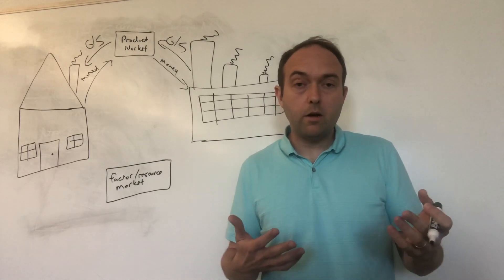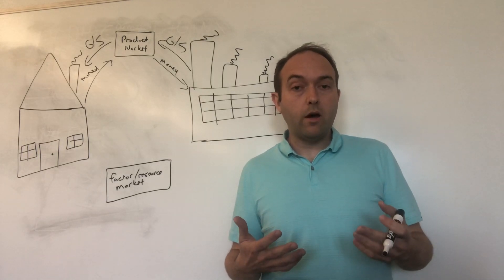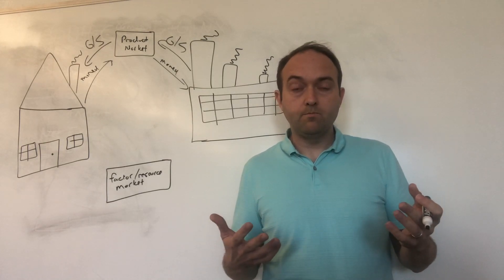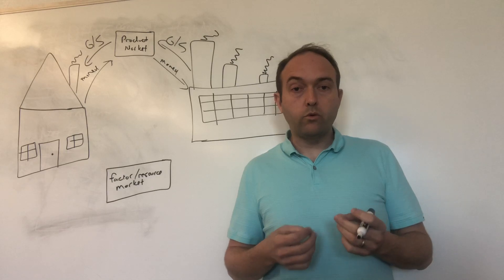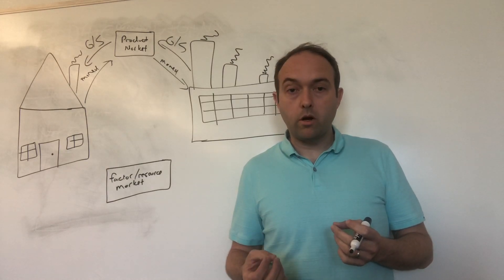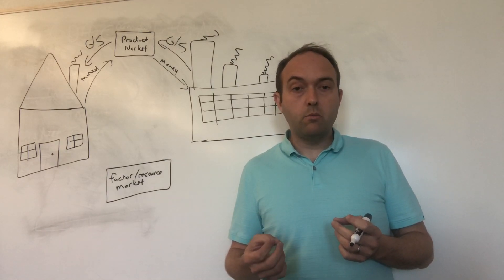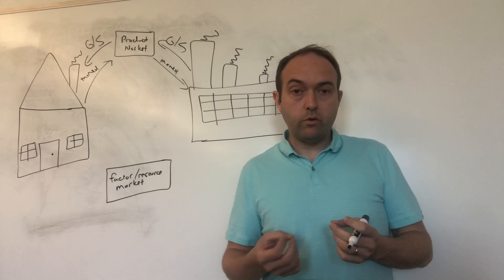they use that labor to make the television. So in a resource, sometimes known as a factor market, we see firms buying resources like labor. And when they buy them, they are giving money for them to the households.